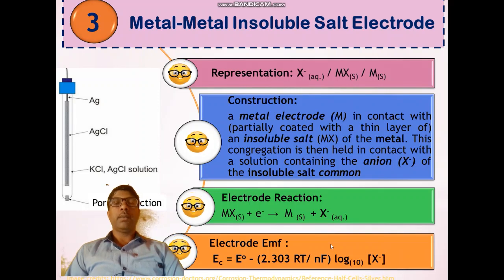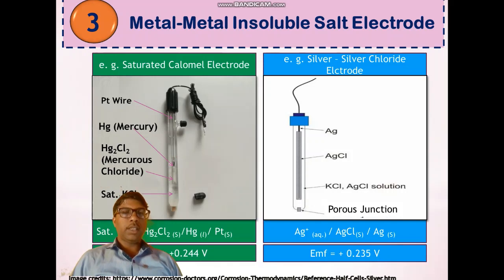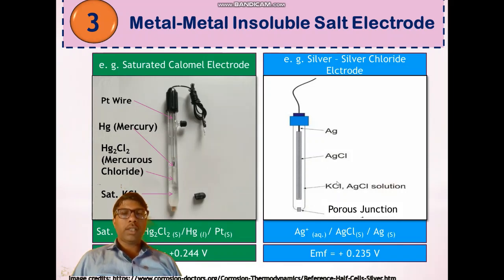The EMF is represented by: Ec = E0 − (2.303RT / nF) × log[X−]. The EMF of this electrode depends upon the concentration of the halide ion. Examples include the saturated calomel electrode — containing platinum wire, mercury, mercurous chloride, and saturated KCl — and the silver-silver chloride electrode, containing silver, silver chloride, and KCl. Mercury is the metal, mercurous chloride is the metal insoluble salt, and saturated KCl is the electrolyte.